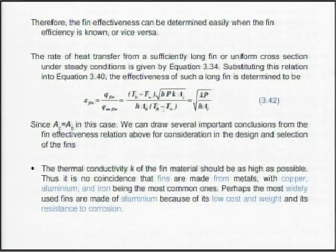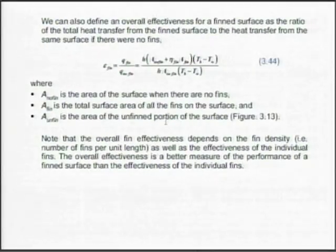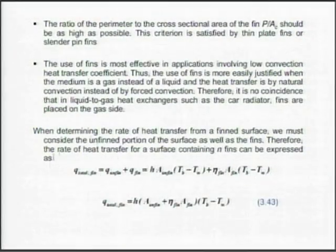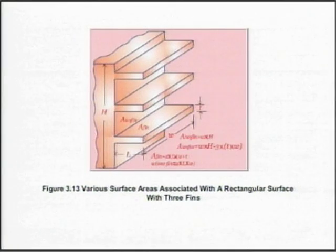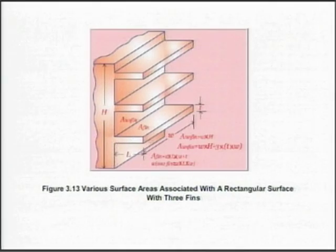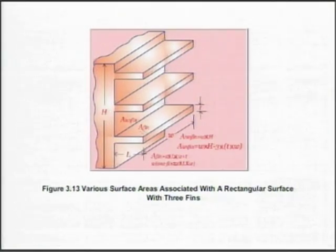You can relate effectiveness of the fin with the efficiency of the fin with area of the fin upon base, and generate a whole lot of equations for effectiveness. The total heat transfer rate of the fin array is Q_unfin plus Q_fin, where the unfin portion is the base area where there is no fin. That is how we do the bookkeeping.